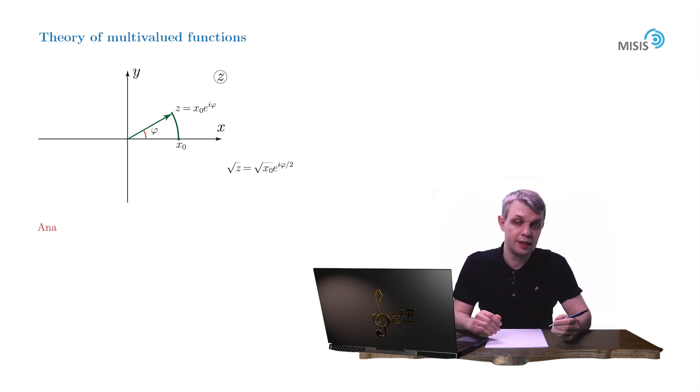This procedure is called an analytic continuation of the square root into a complex plane along a curve. As you see, it comprises three components.